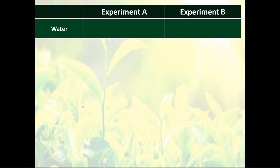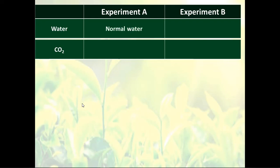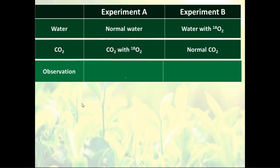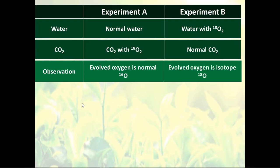So in experiment A, it was normal water and the carbon dioxide was with the isotope. In experiment B, the water contained the isotope and the carbon dioxide was normal. Can you guess what they observed? In the first experiment, the evolving oxygen was normal — because the source of oxygen is water. And in the other experiment, we had the isotope oxygen in the water, so the evolving oxygen was an isotope.